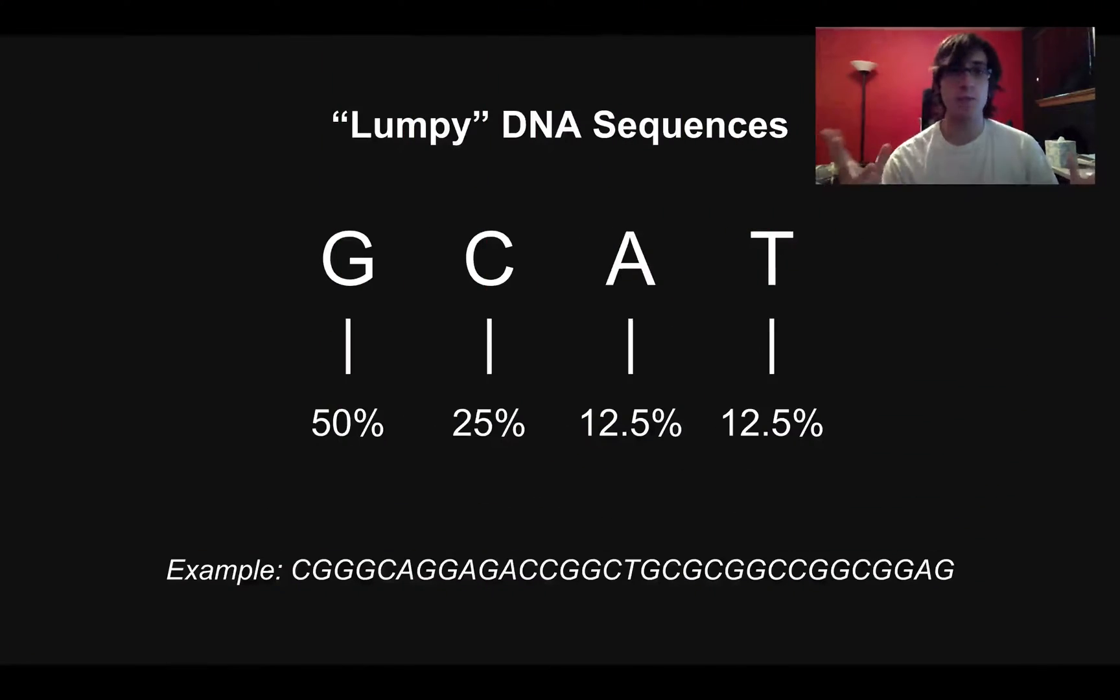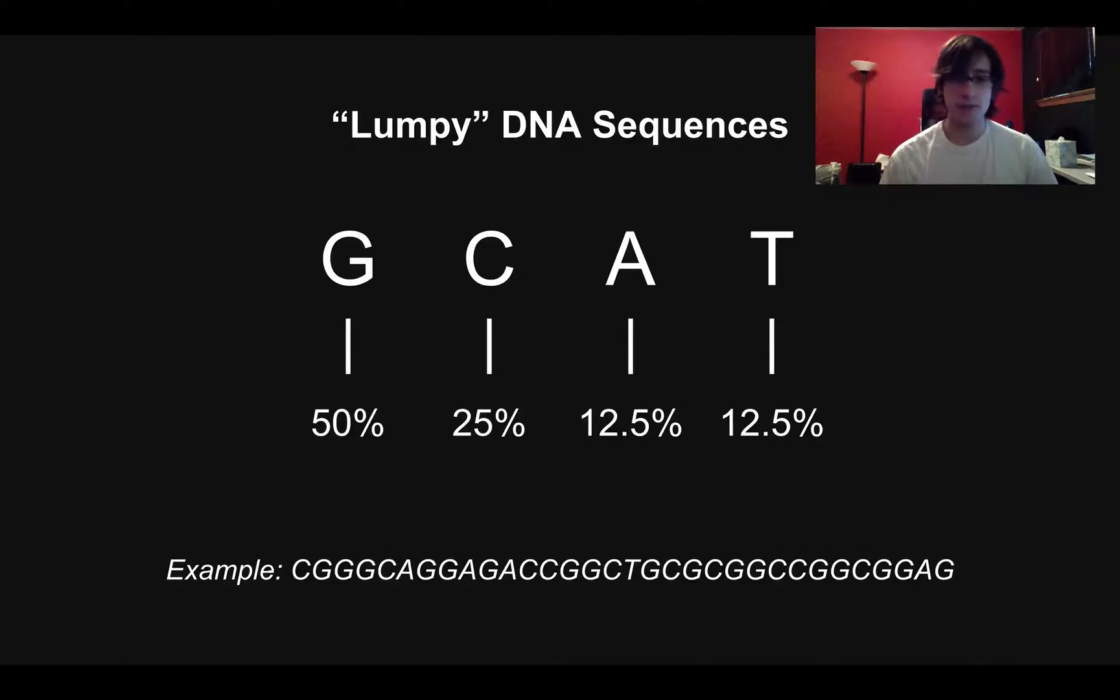So now I want to consider a more complex example where different letters are actually more or less likely. So I'm going to call this lumpy DNA sequences. For instance, at the bottom I've included an example, you see that G is a lot more probable and C is a lot more probable and A and T don't happen as much. And so this is just an example of a very simple kind of data where certain symbols are more probable than other symbols, happen more frequently.